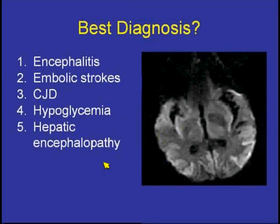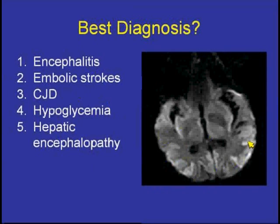The most common audience answer is Creutzfeldt-Jakob disease, and indeed that is the correct diagnosis. This reemphasizes that the diffusion-weighted scan is the most sensitive pulse sequence we have for detection of Creutzfeldt-Jakob disease — it is relatively subtle on the FLAIR scan.